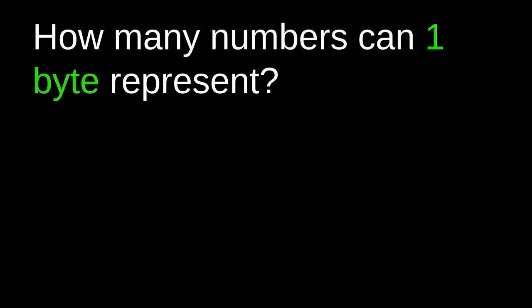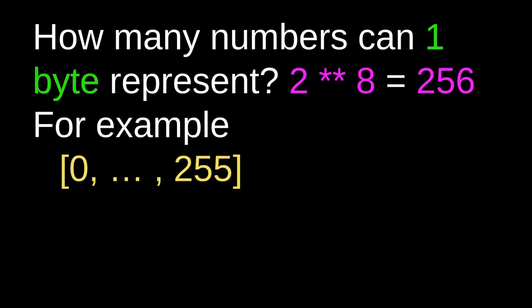We can now answer our original question of how many numbers can 1 byte represent. We know that 1 byte is equal to 8 bits, so 1 byte can represent 2 raised to the power of 8 numbers, which is equal to 256. So for example, a sequence of 1 byte can represent any number between 0 and 255.